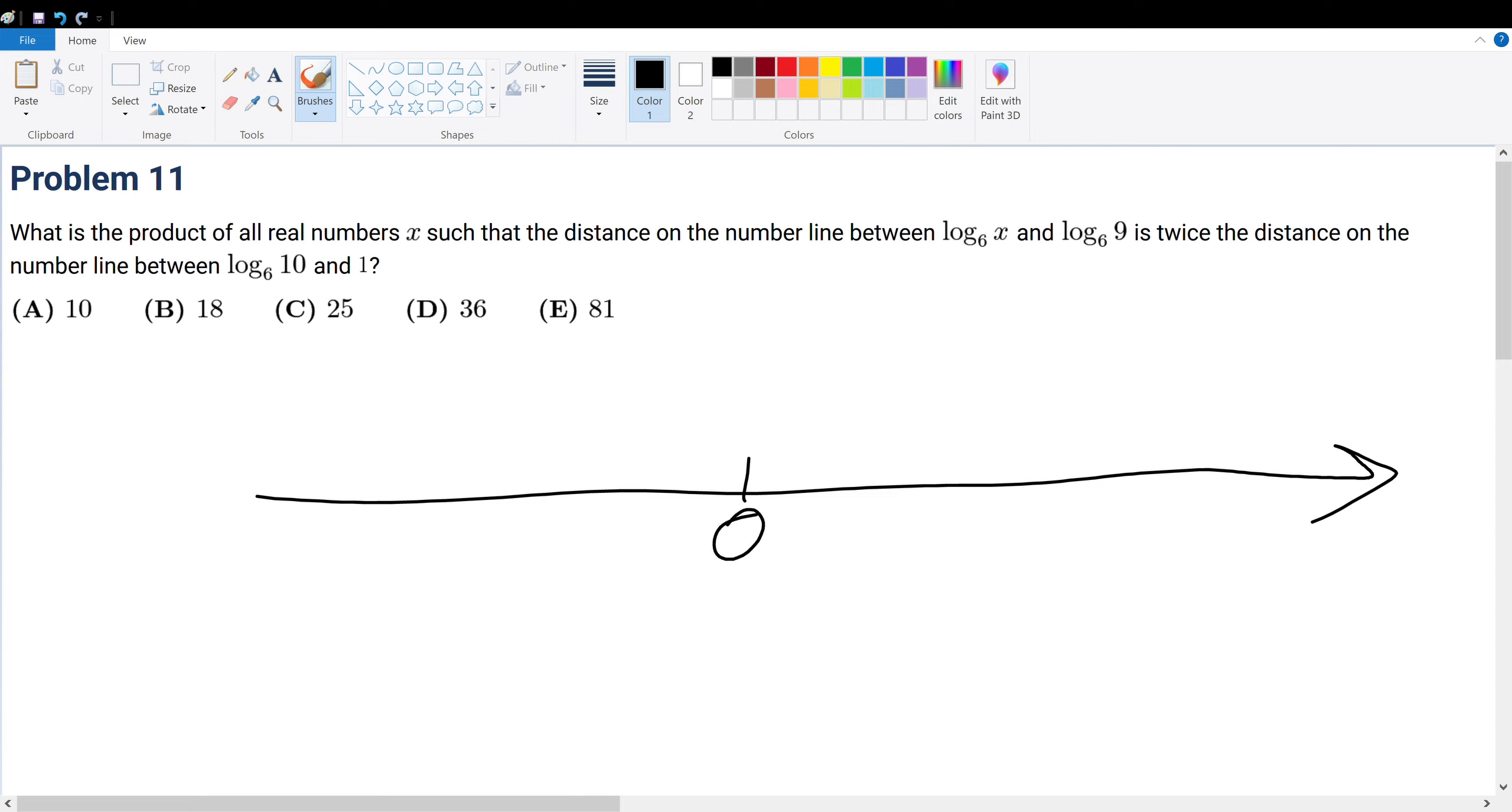Let's say this is 0. I don't know where log base 6 of 10 is. It would be roughly 1 point something. So I would say log base 6 of 10 is right here. Then let's say 1 is right here. The distance right here will be 1 minus log base 6 of 10.